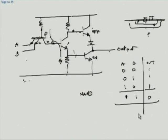The output configuration is called a totem pole output. This TTL family is somewhat older logic, but it was used very widely and was the model for the subsequent CMOS logic we just discussed.